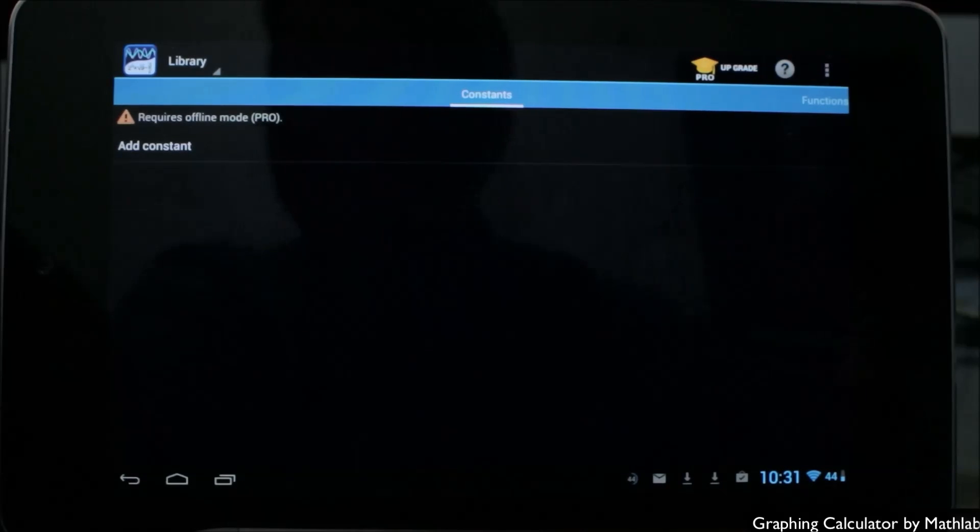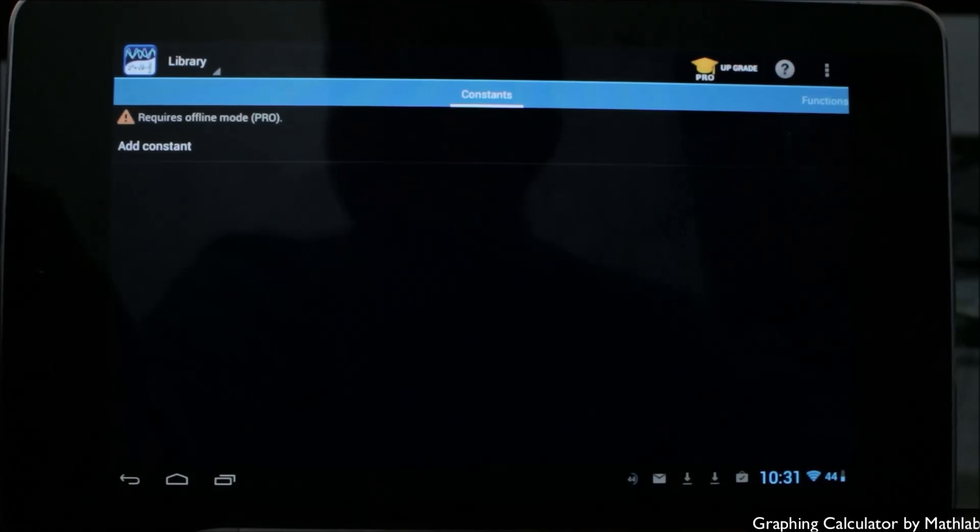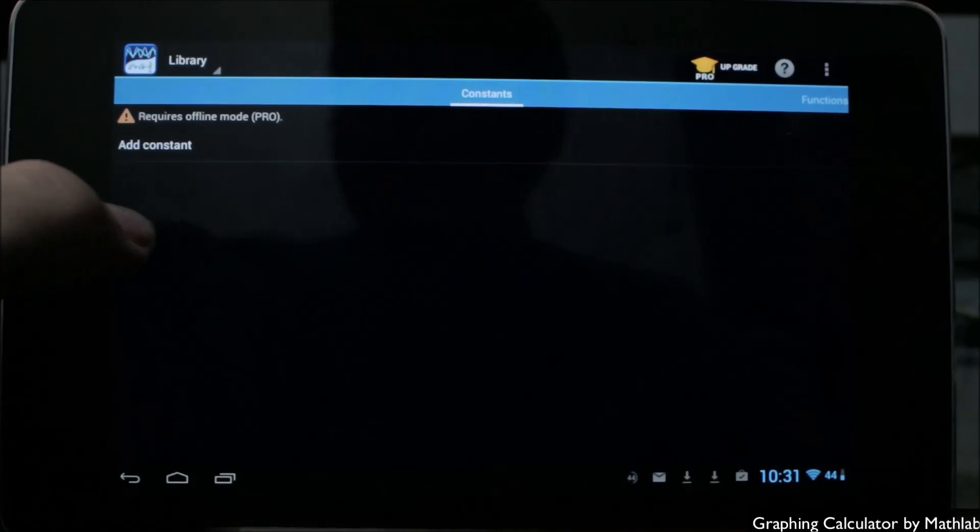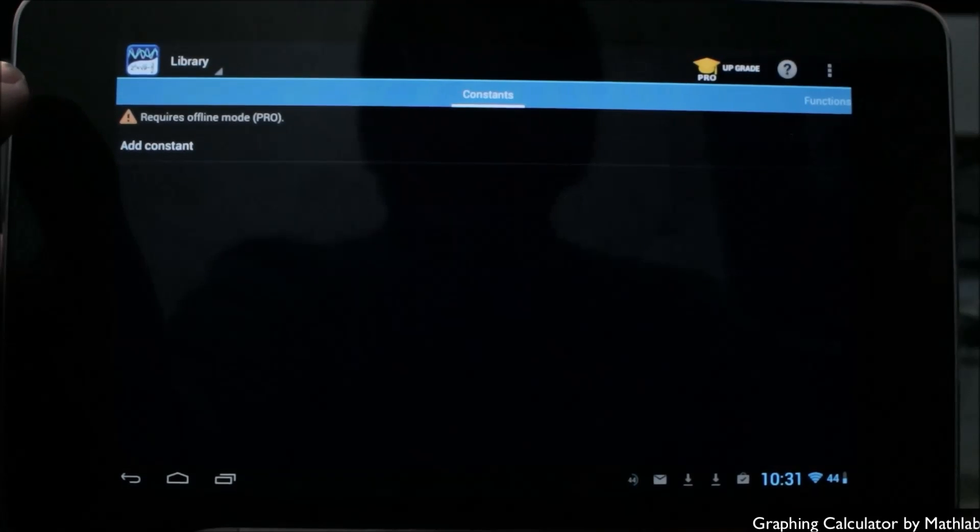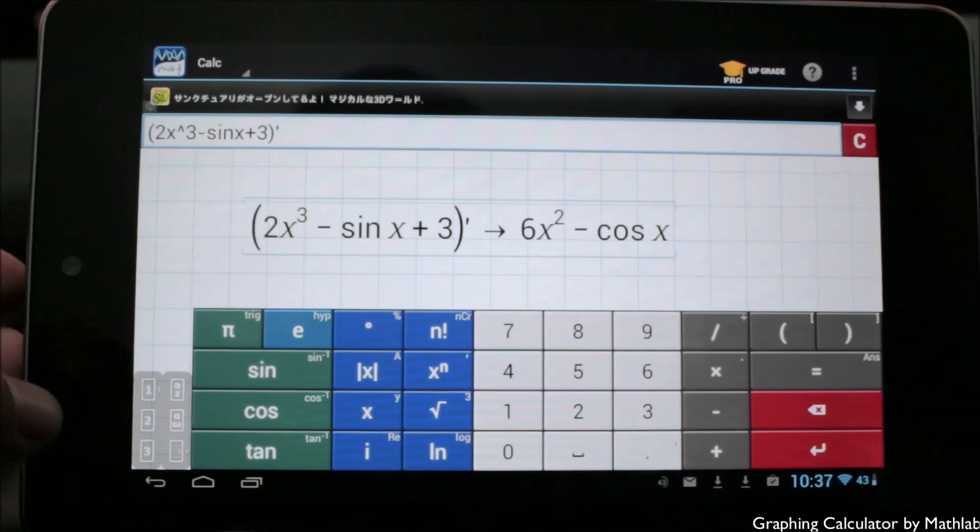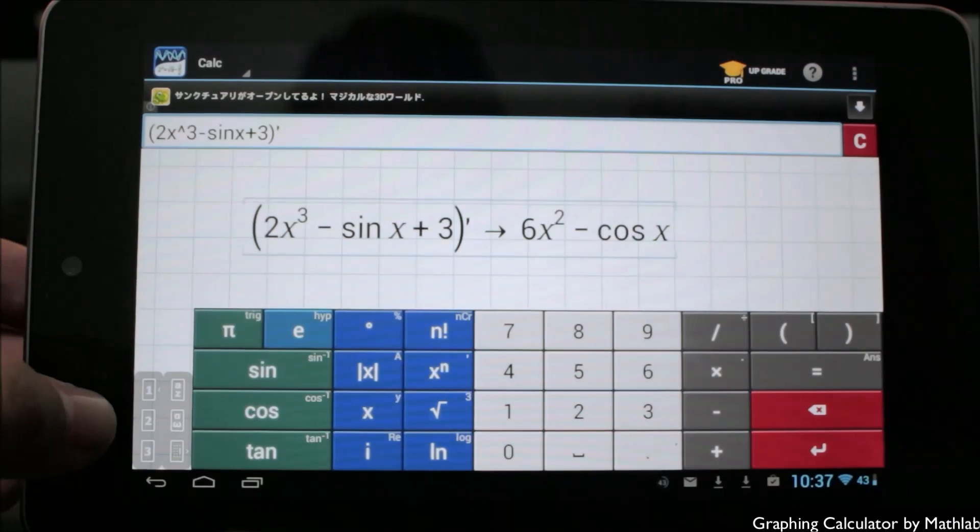Last but not least, we have the library mode which can be used to enter and save things like your own constants, functions, and expressions in this library so that they can be used in the future whenever you need to use them or reference them again. Going back to the interface, you also notice there's a 1, 2, 3. These represent the workspace.